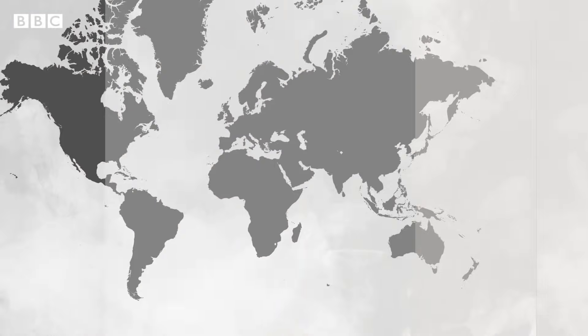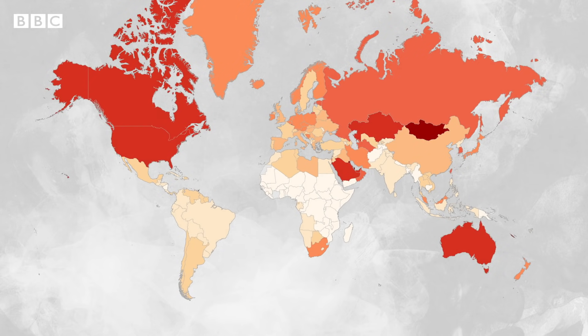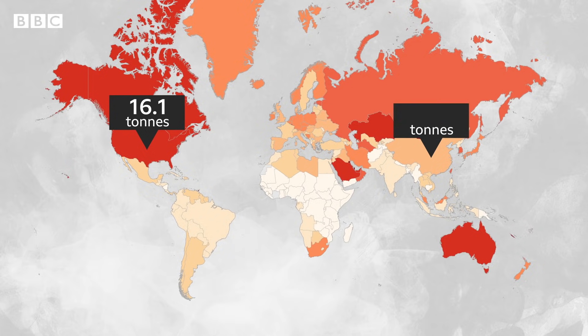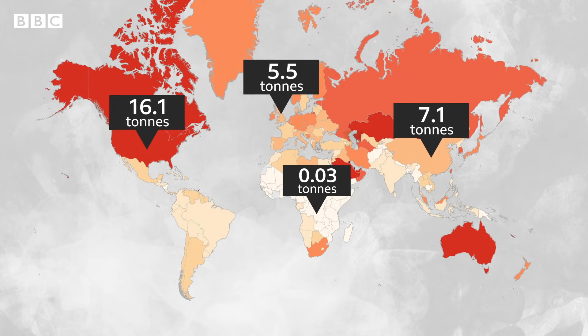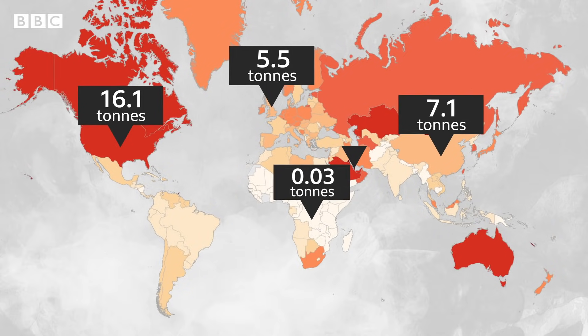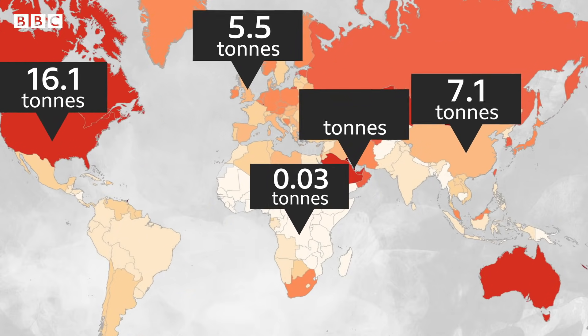But overall, people in poorer countries produce far smaller amounts of greenhouse gases than people in richer countries do. If you look at just what a country produces, the average amount of carbon dioxide emissions per person in the United States is about 16.1 tonnes per year. In China, it's 7.1 tonnes, and in the UK, it's about 5.5 tonnes. But in the Democratic Republic of Congo, it's only 0.03 tonnes, while in Qatar, which has a really small population but produces so much oil and gas, it's 38.6 tonnes.